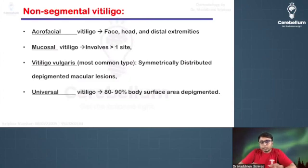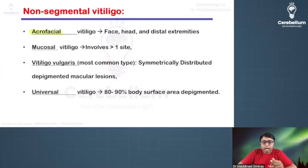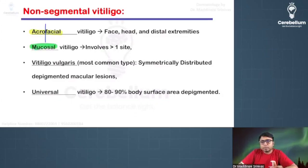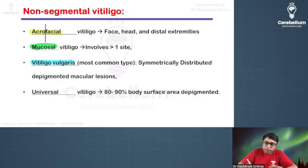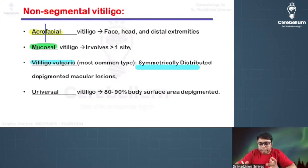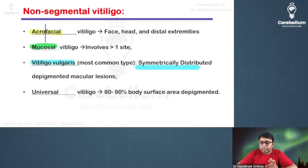Acrofacial vitiligo affects the face and acral areas — the extremities. Mucosal vitiligo involves the mucosal surfaces. Vitiligo vulgaris is the most common type, where symmetrically distributed depigmented lesions are seen all over the body. Universal vitiligo affects almost the entire body.